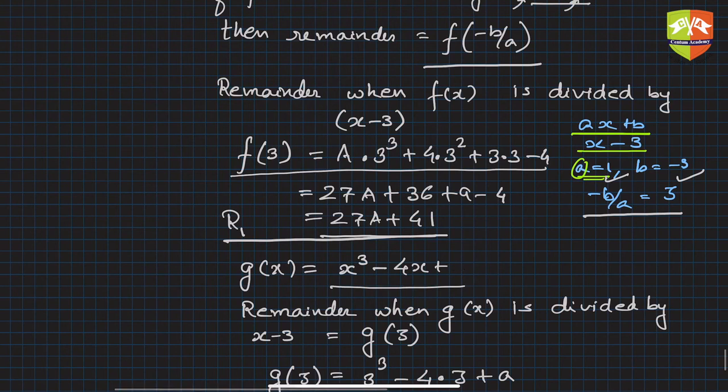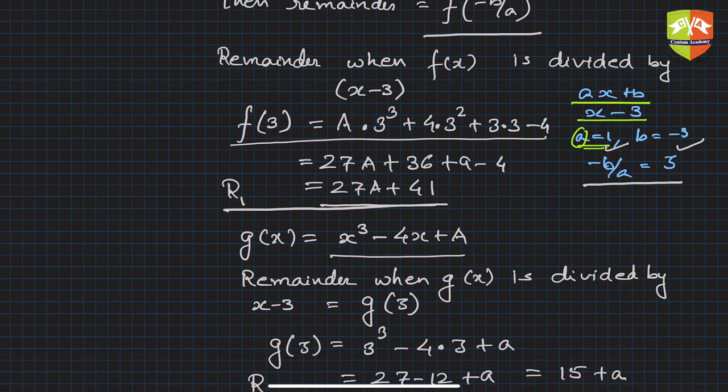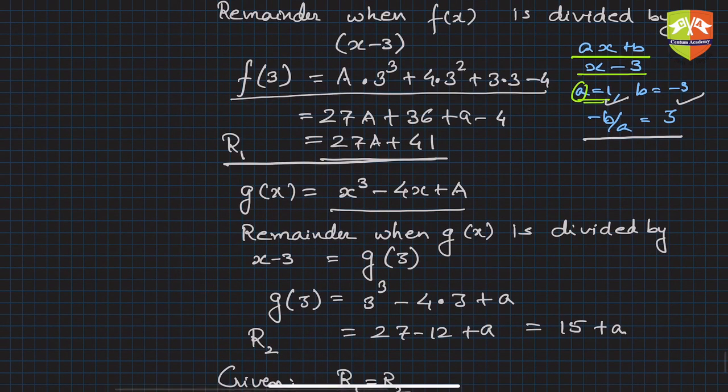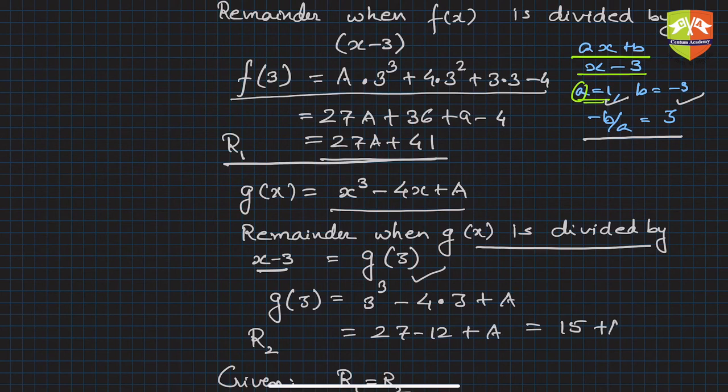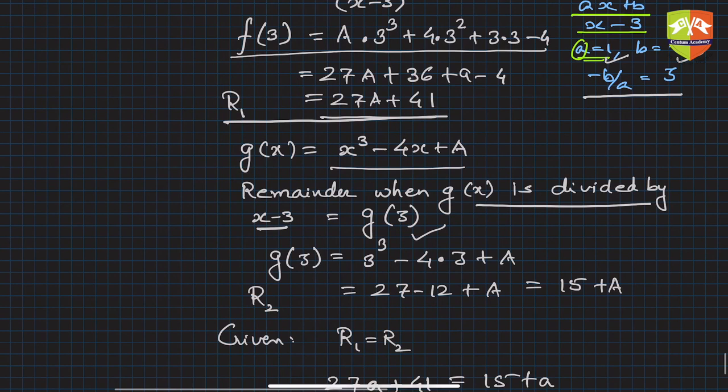In the second case, we'll apply remainder theorem. The remainder when g(x) is divided by (x - 3) will be simply g(3). If you deploy 3 into g(x), replacing with capital A everywhere, you calculate the remainder.